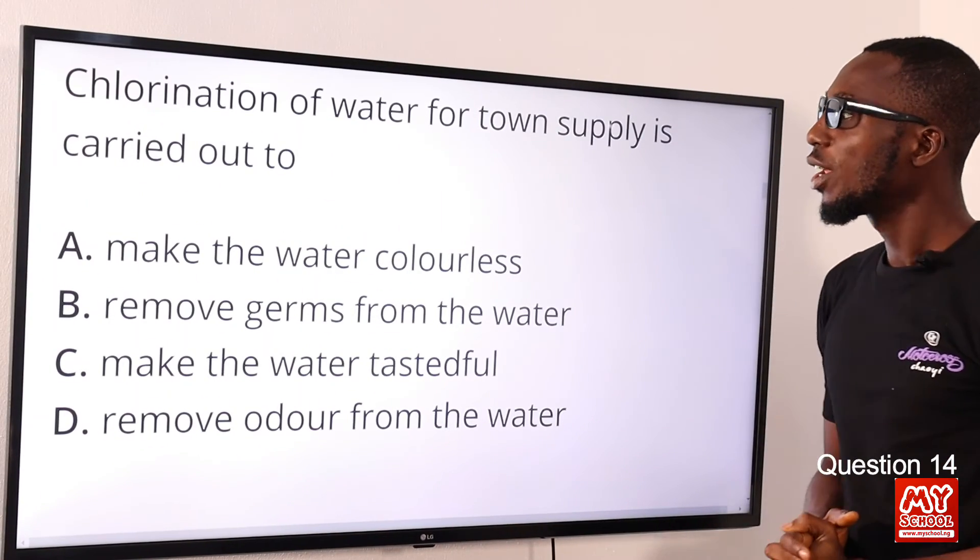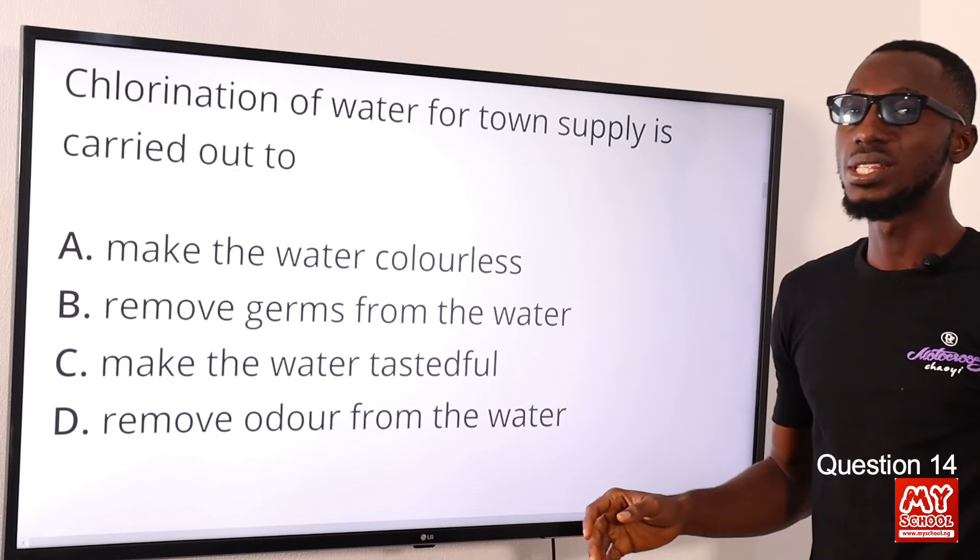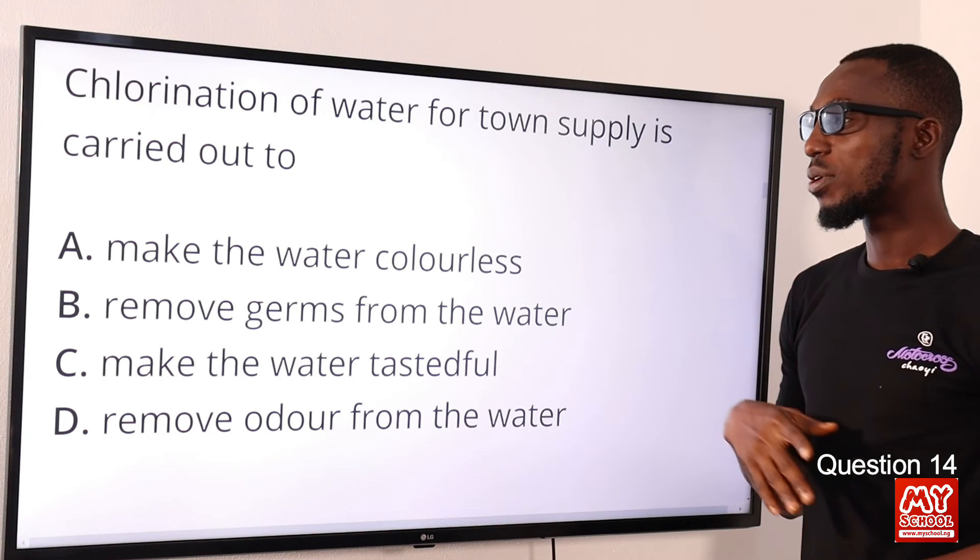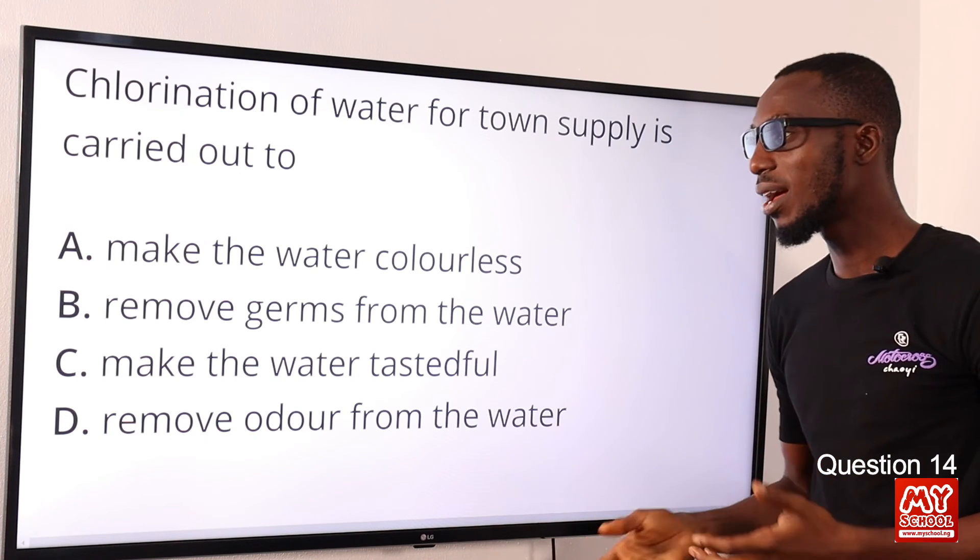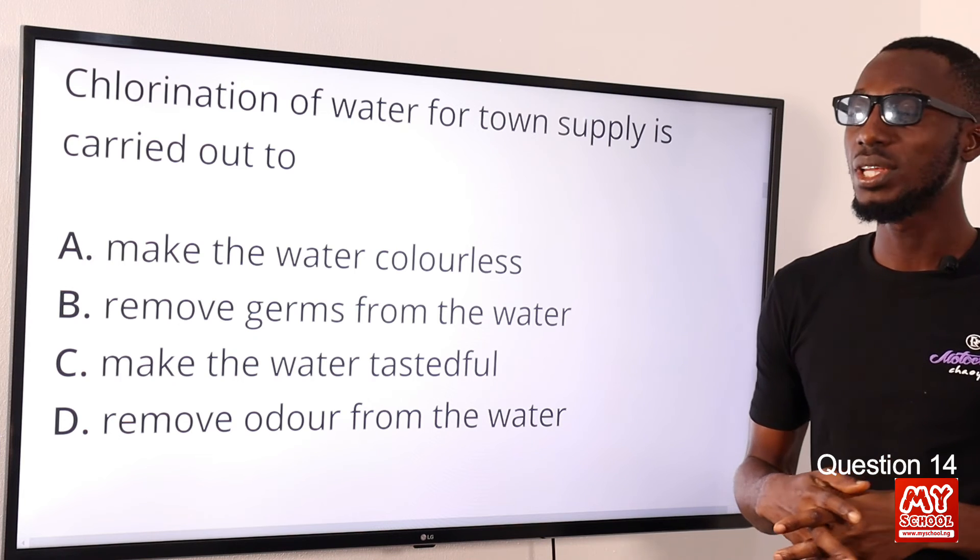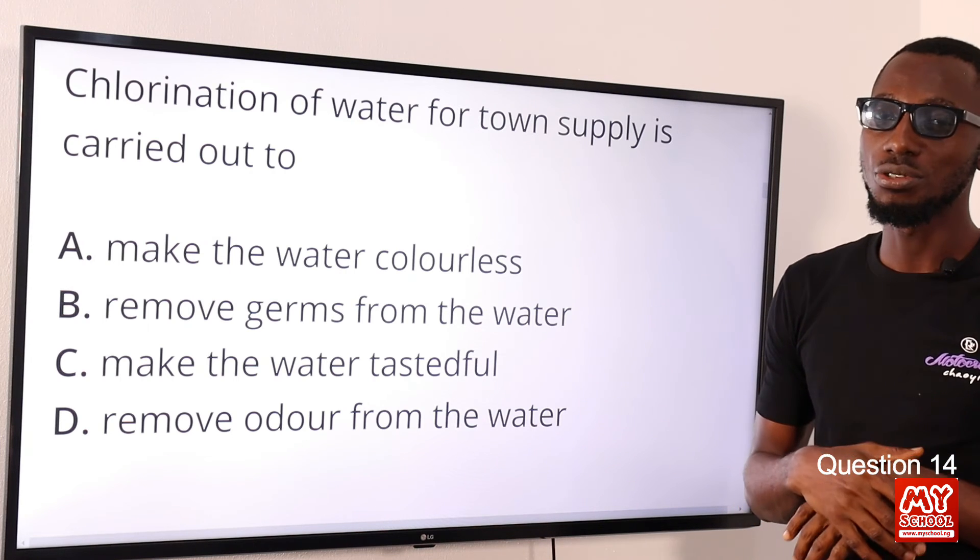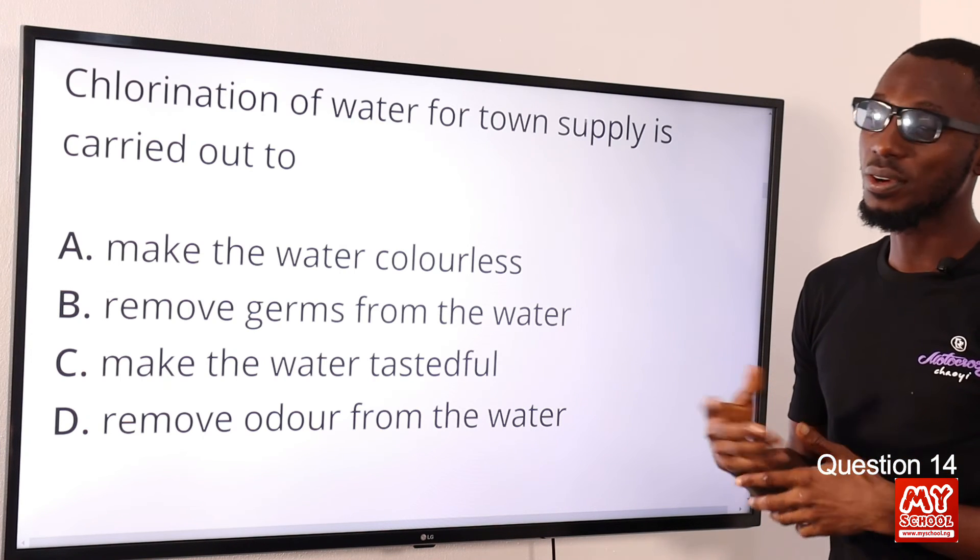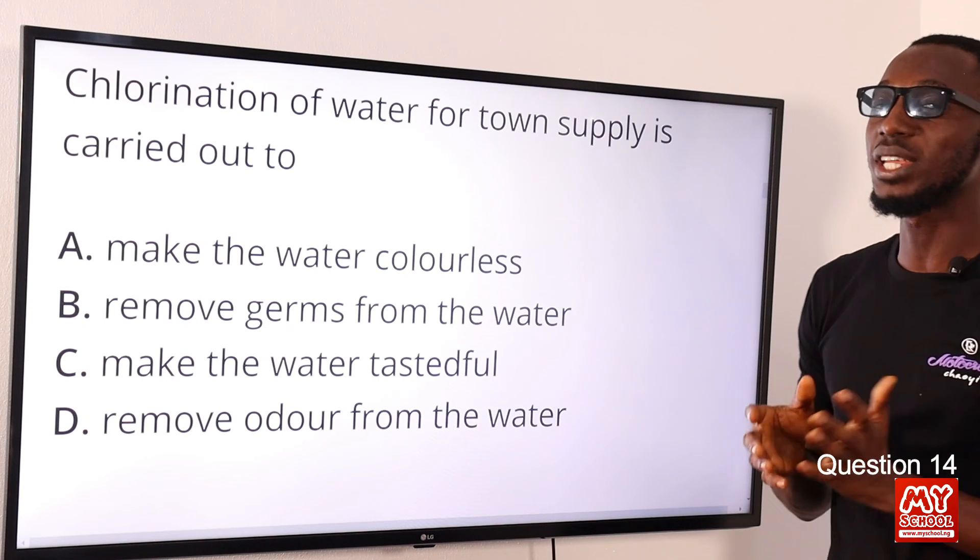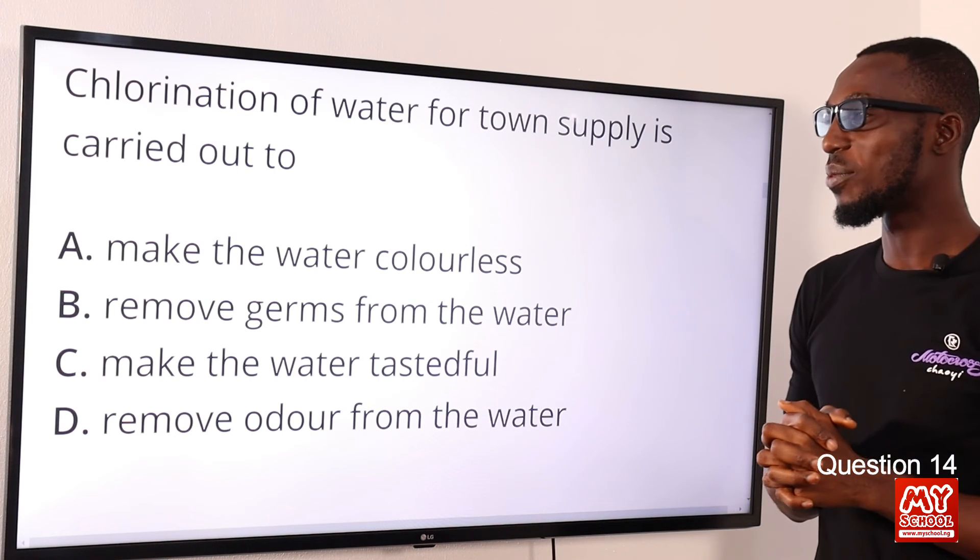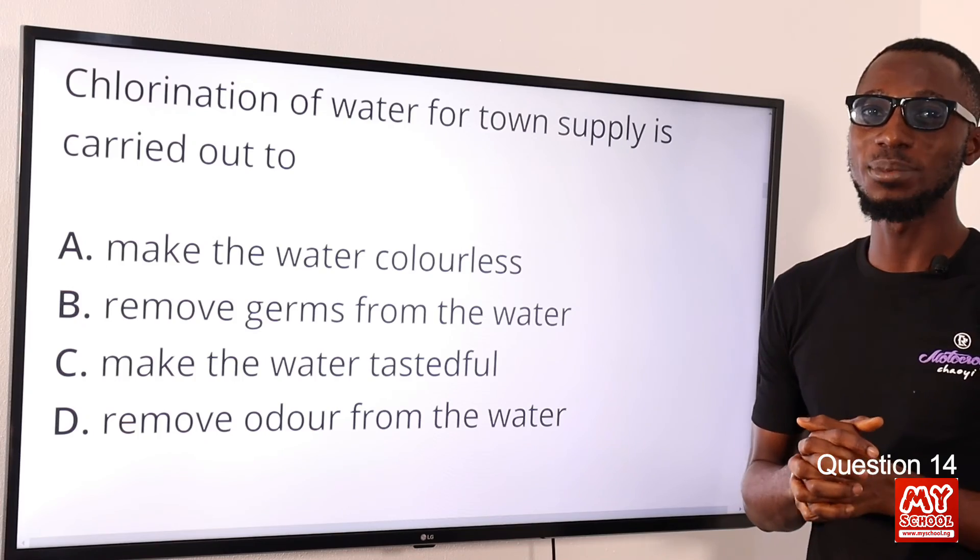Question 14: Chlorination of water for town supply is carried out to do what? Once you've done coagulation, once you've done sedimentation, you've filtered water, now it's time to kill germs. What do we introduce? We introduce chlorine—of course you use this as well in swimming pools. The correct option here is option B: to remove germs or to kill germs from the water. Option B is the correct option.